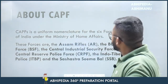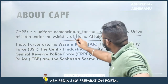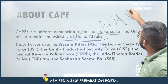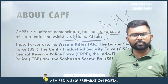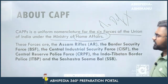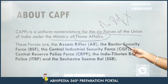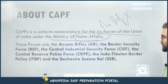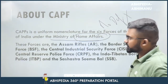Let us look at which forces are included in CAPF. There is a uniform nomenclature for six forces of the Union of India under the Ministry of Home Affairs. Please be very careful — these fall under the Ministry of Home Affairs, not the Ministry of Defence. The six CAPF forces are: Assam Rifles, BSF, CISF (Central Industrial Security Force), CRPF (Central Reserve Police Force), ITBP, and SSB (Sashastra Seema Bal).